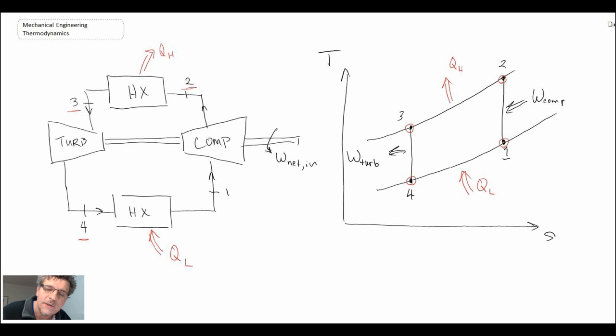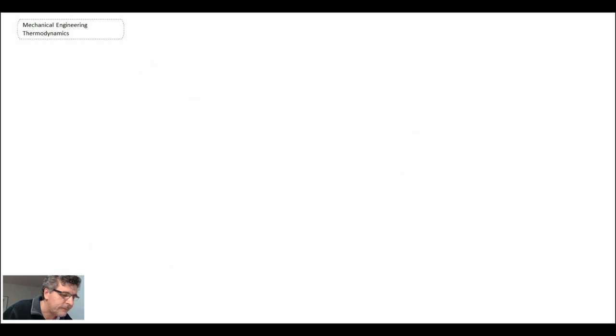Let's take a look at the coefficient of performance. Our desired output is the heat transfer from whatever low temperature source we have, and the amount of work that we're putting in. We put work into the compressor and recover some work out of the turbine, so it's the difference between those two that would be the work in. Enthalpy differences are where we get all the different parameters from, so for QL it would be the enthalpy change between states one and four.